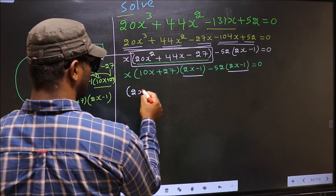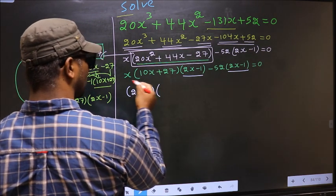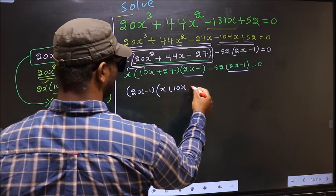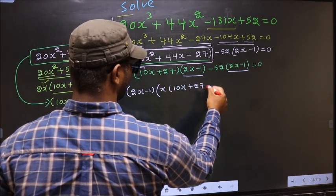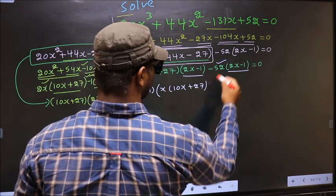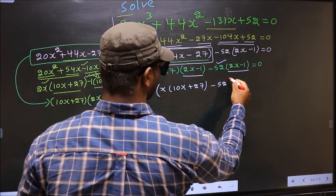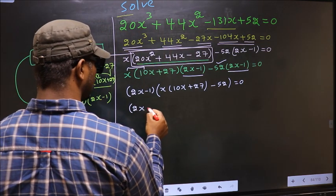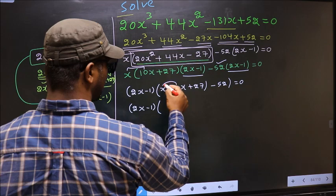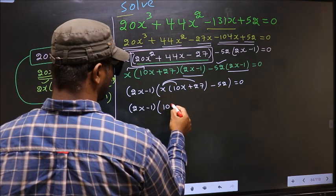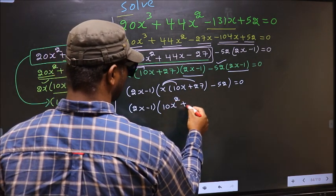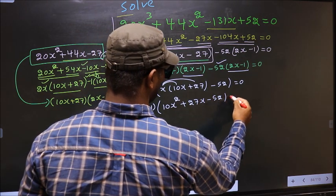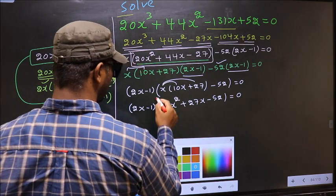So (2x - 1) outside; inside we are left with x(10x + 27) and minus 52 = 0. Opening up the bracket: (2x - 1)(10x² + 27x - 52) = 0. Now we got a new quadratic: 10x² + 27x - 52.